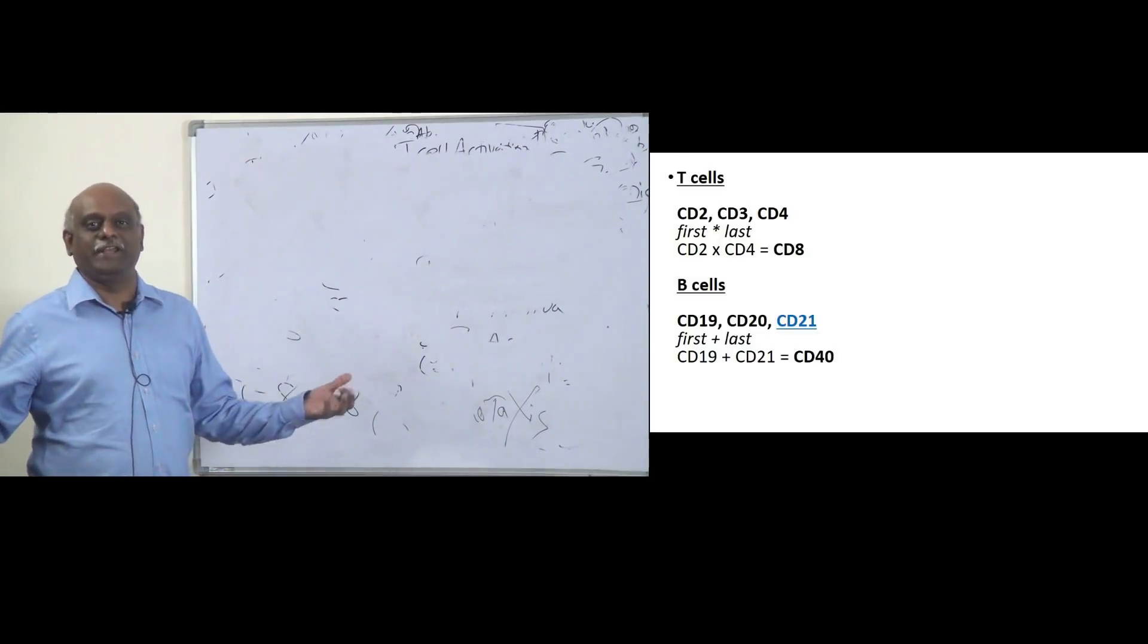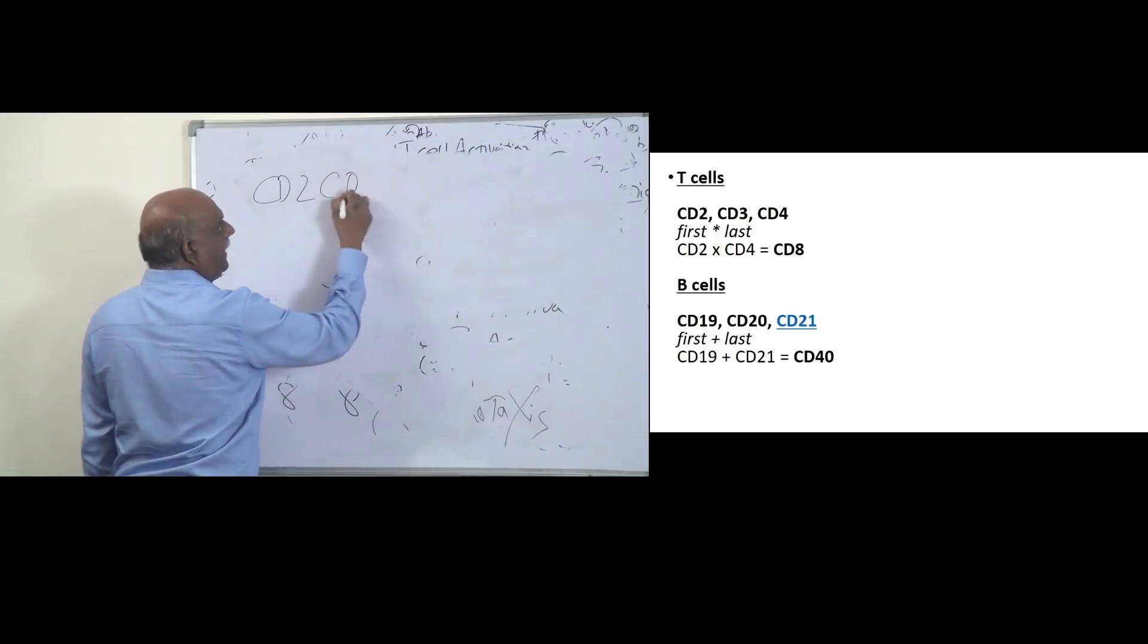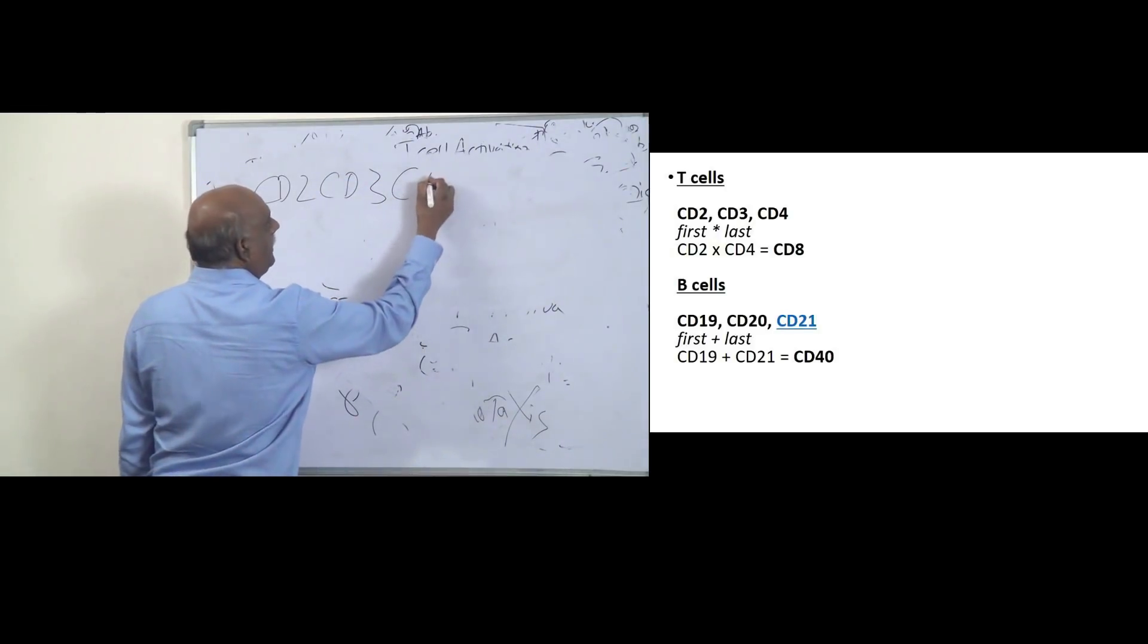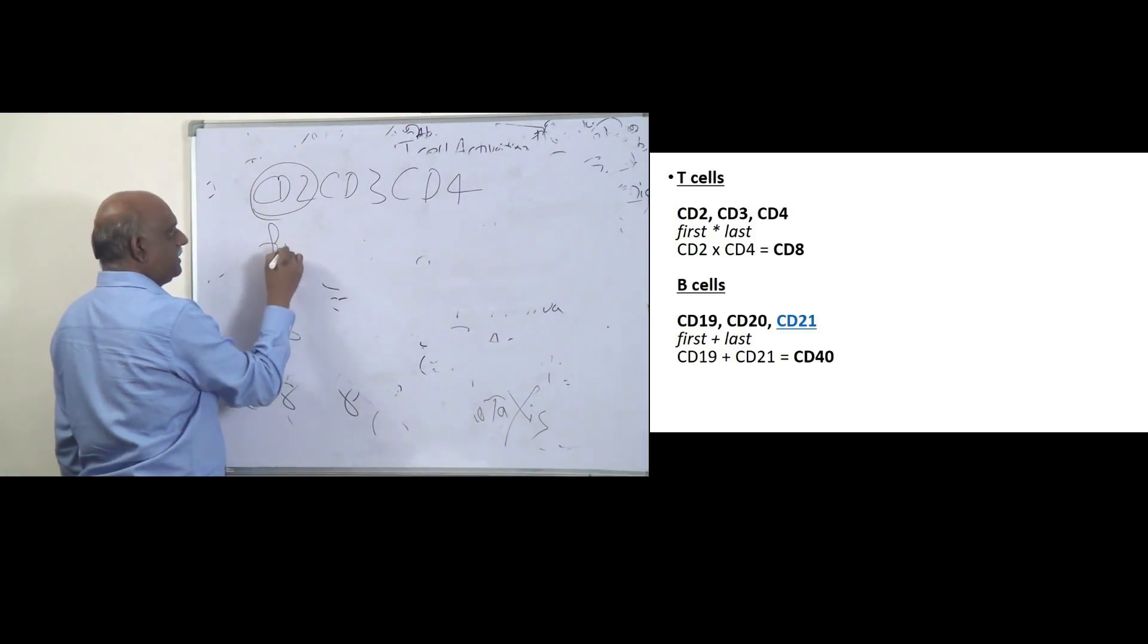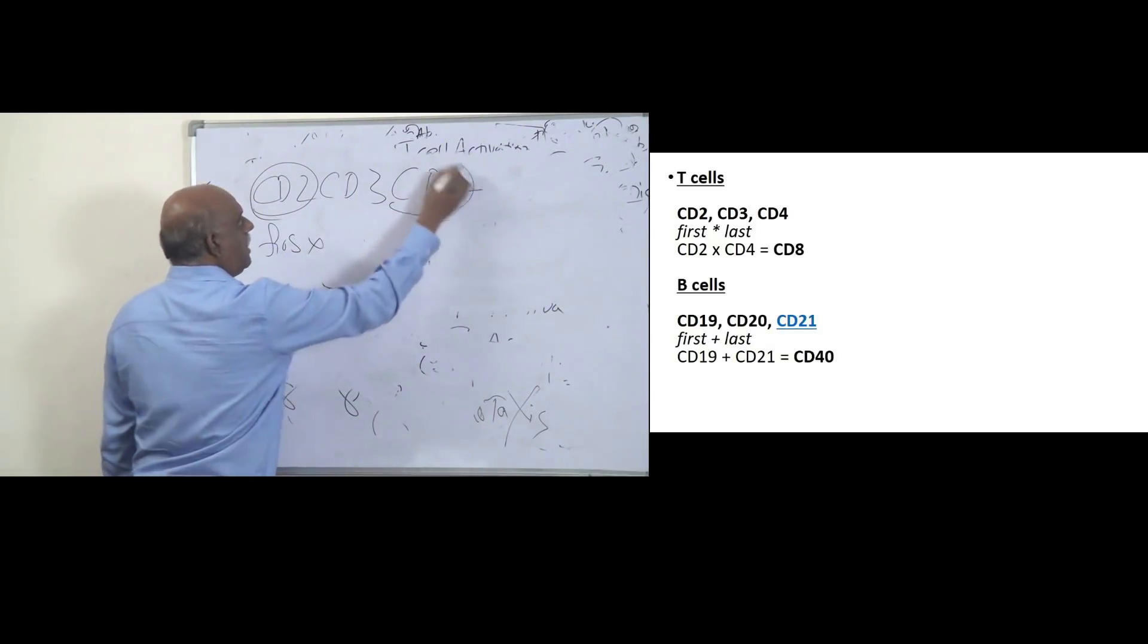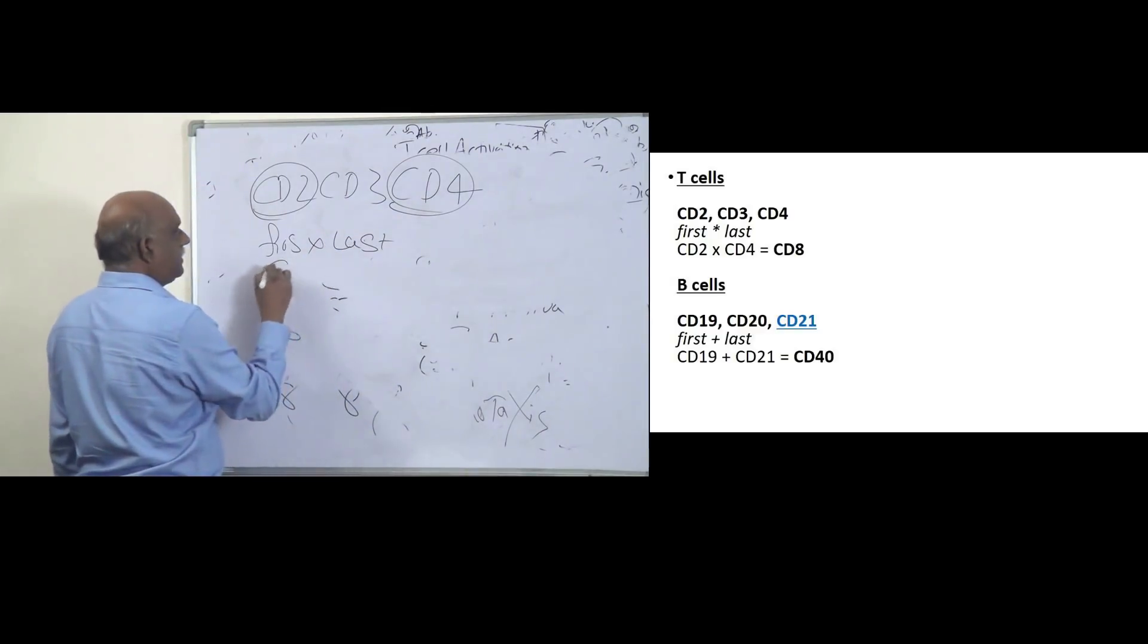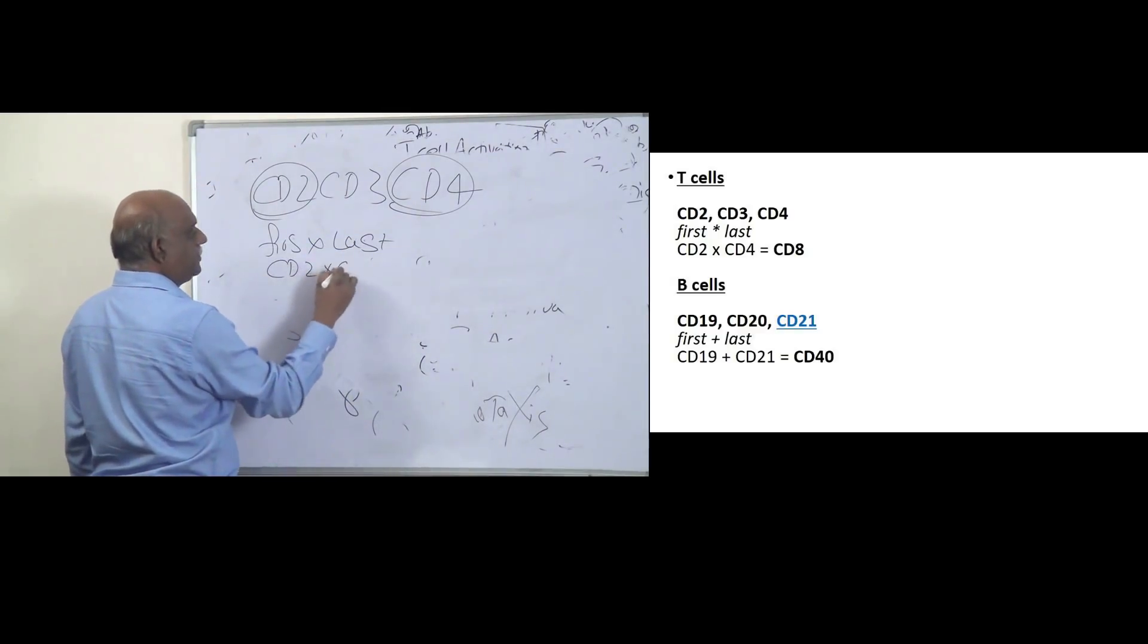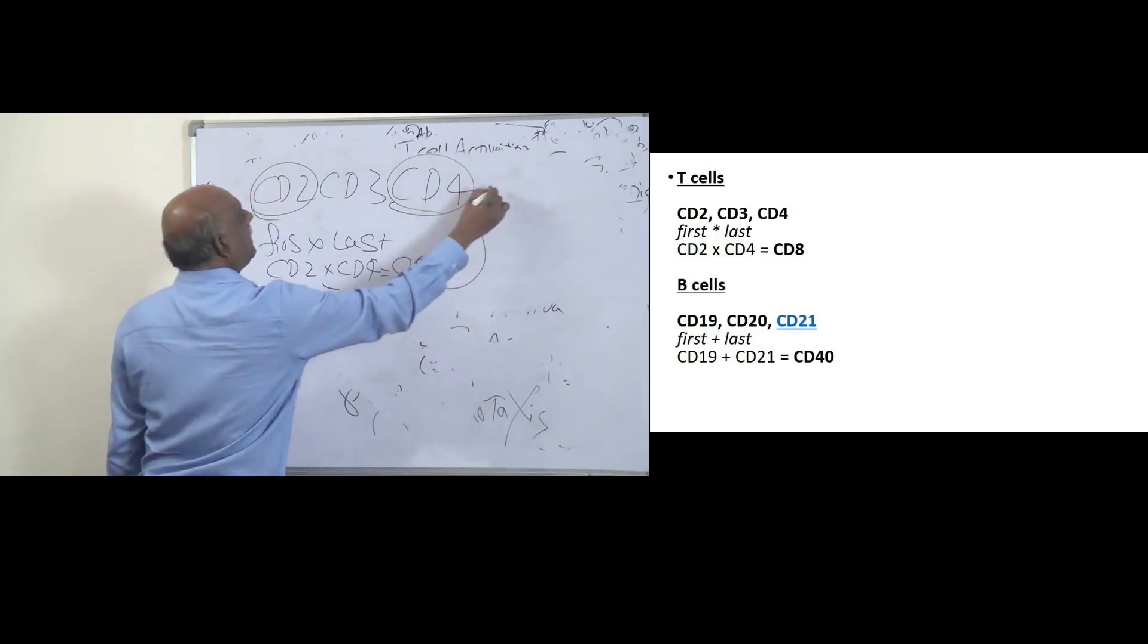Everything starts with T only. So CD2, CD3, CD4. Remember, first into last. How much is that? CD2 into CD4 is equal to CD8. So that is also T-cell marker.